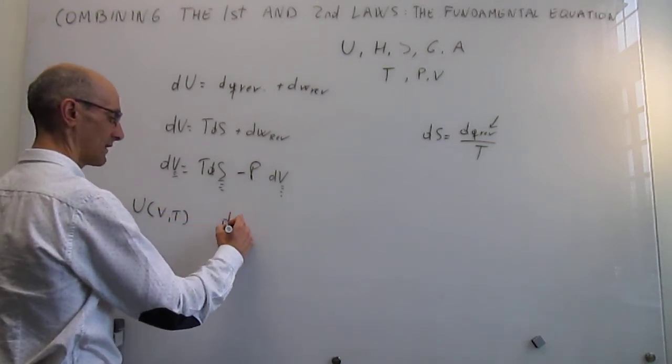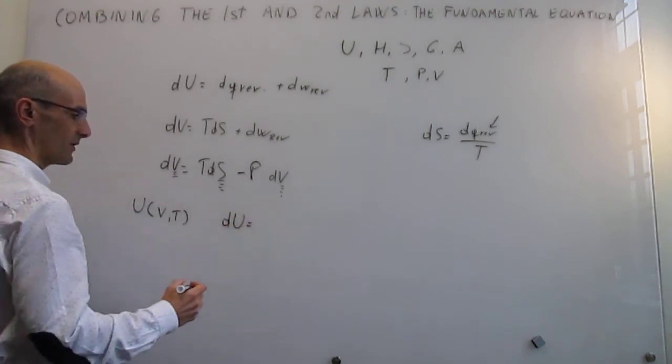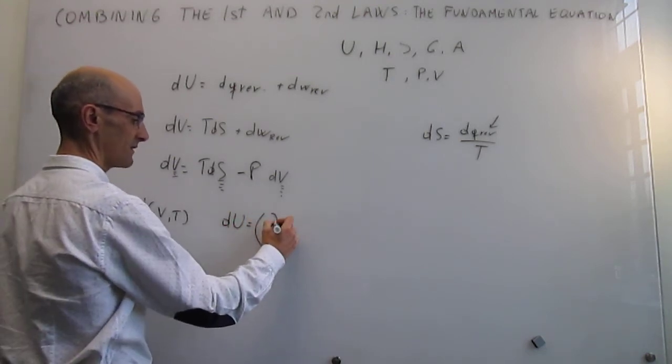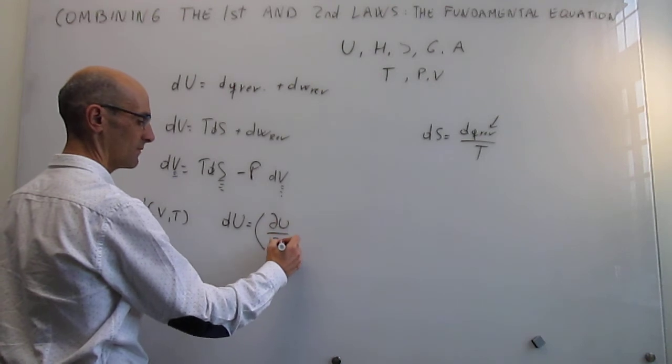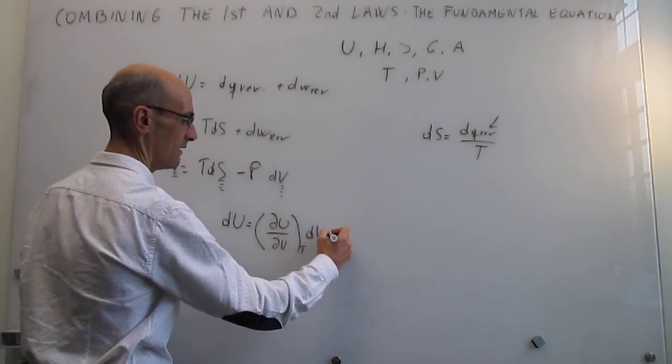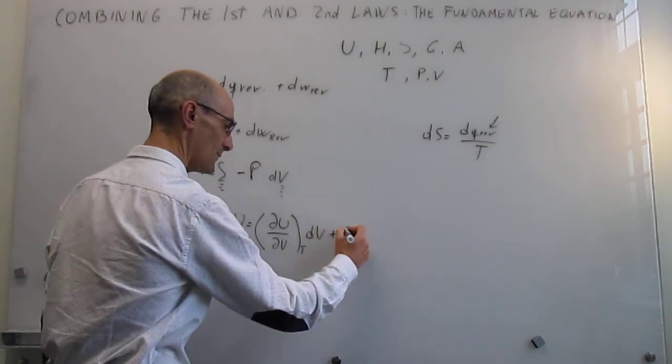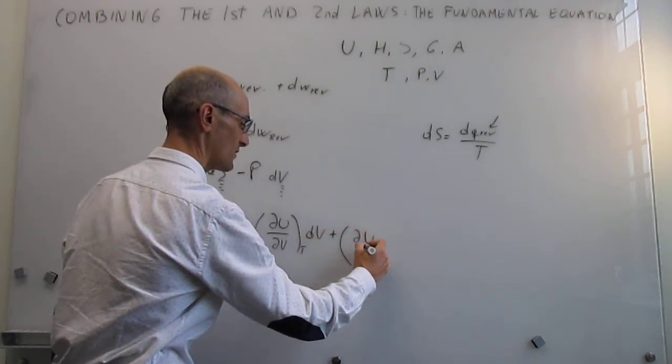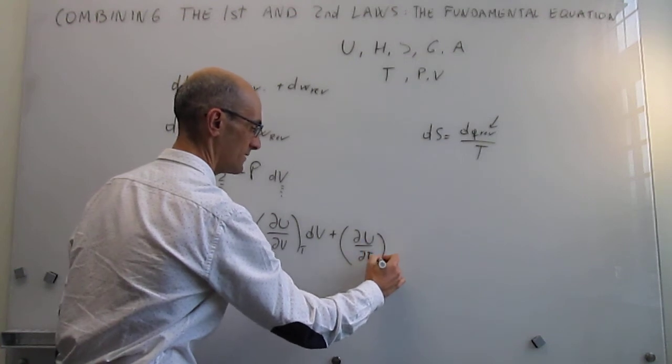And we said then that if that is the case, dU can be expressed simply as the partial derivative of U with respect to volume at constant temperature dV, plus the partial derivative of the internal energy with respect to temperature at constant volume dT.